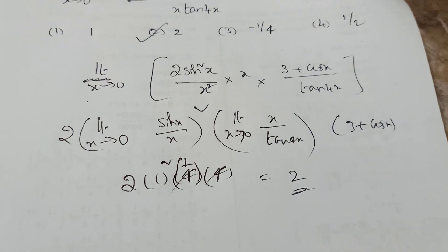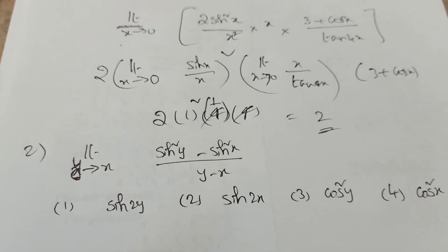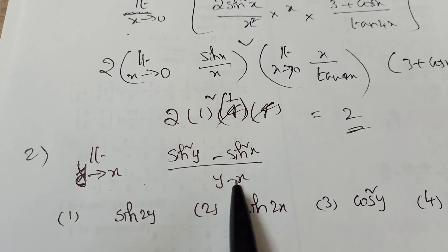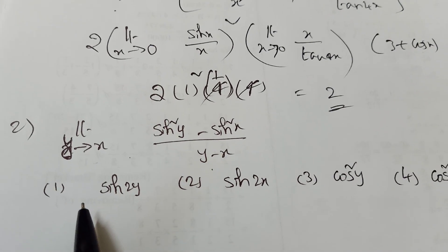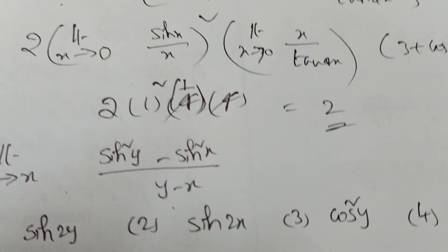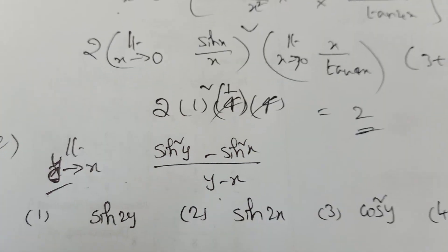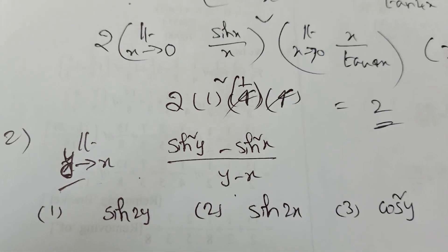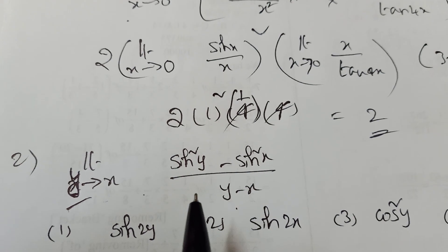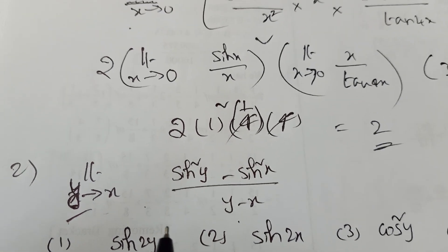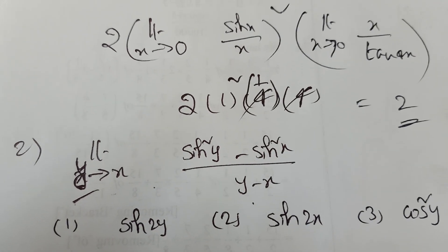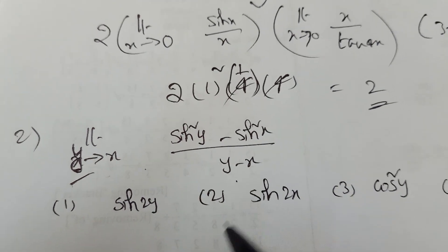Second problem: limit y tends to x of (sin²y − sin²x) divided by (y − x). Options are sin2y, sin2x, cos2y, cos2x. Since y tends to x, we treat x as a constant and differentiate with respect to y — numerator and denominator separately.